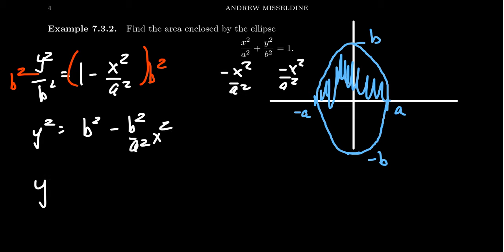This gives us y squared equals b squared minus b squared over a squared x squared. Then take the square root. We get y equals—normally there would be two square roots plus or minus—but as we're taking just the upper semi-ellipse, we're going to take the positive one.